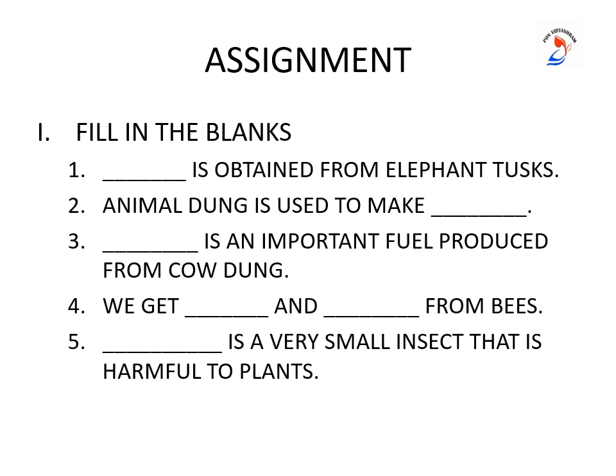Now we will have a simple assignment to check whether you have understood the concepts. Fill in the blanks: Dash is obtained from elephant tusks. Animal dung is used to make dash. Dash is an important fuel produced from cow dung. We get dash and dash from bees. Dash is a very small insect that is harmful to plants. Take your textbook, read it, and try to solve the book back exercises. Thank you, children.